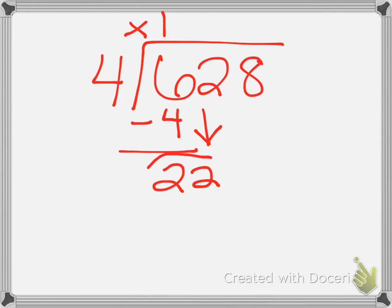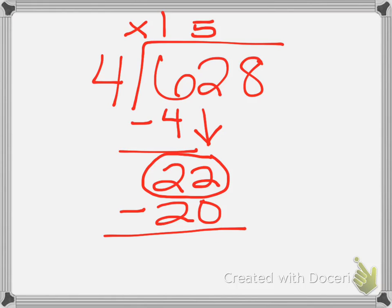I now ask myself, how many times does 4 go into 22? They should say 5 times. So 5 times 4 is 20, and I'm going to subtract it. That gives me two tens left over, and I'm going to bring down my eight ones.